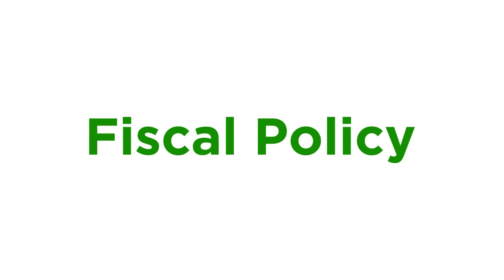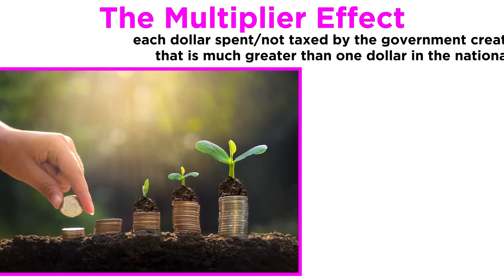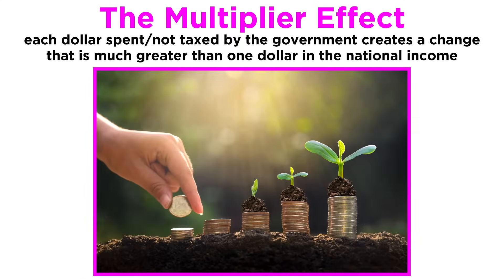In other words, fiscal policy is a powerful tool. The key to its power is the multiplier effect. The multiplier effect in fiscal policy is the idea that each dollar spent, or not taxed by the government, creates a change that is much greater than one dollar in the national income. Essentially, any effect of a change in fiscal policy is multiplied.